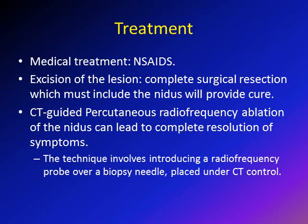What is the treatment for osteoid osteoma? There are three main lines: medical treatment, surgical excision, or CT-guided radiofrequency ablation. Medical treatment depends on the fact that osteoid osteoma is a self-limiting disease that usually resolves after about two years. The patient can be treated with NSAIDs to decrease the pain, and usually after about two years the pain will completely resolve. The problem is that not all patients can tolerate the pain for two years, and most will require surgical excision or radiofrequency ablation. Surgical excision must include the whole nidus to provide cure.